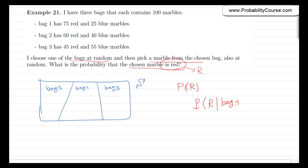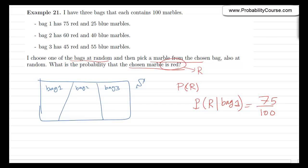If I have chosen bag 1, then I know what probability of R is — there are 100 marbles in the bag and 75 of them are red, so the probability of being red is 75 over 100. So if I know which bag the marble is from, then it is easy to calculate that probability. But the problem is that we don't know which bag has been chosen. The good thing is that we have the conditional probability — that's a typical scenario in which we can use the law of total probability. We have the conditional probabilities, but we are interested in the unconditional probability.